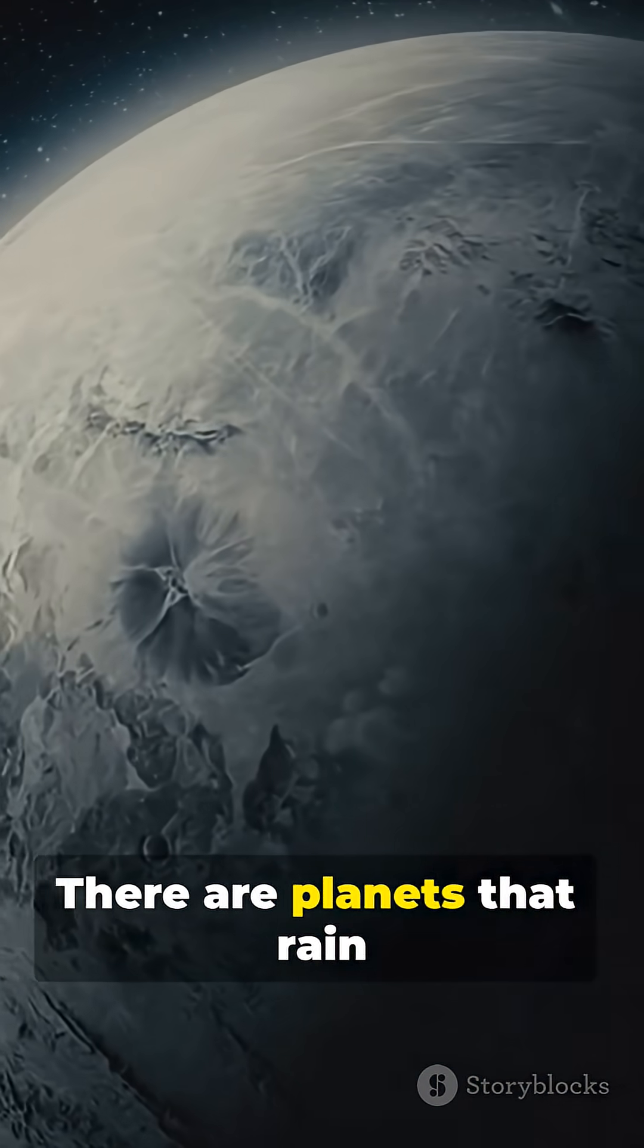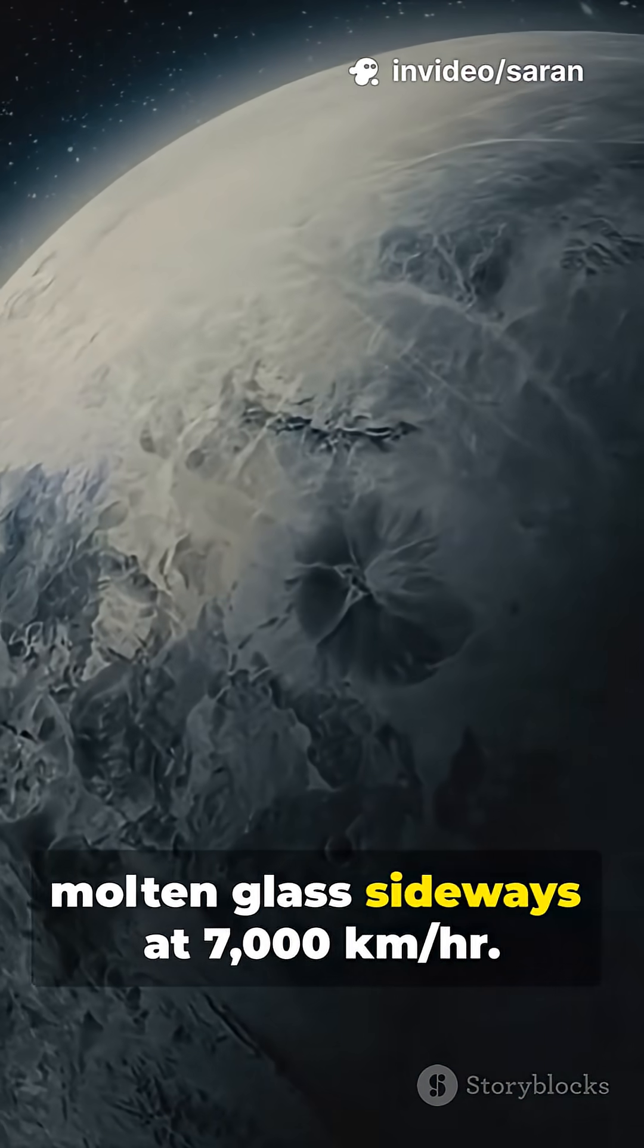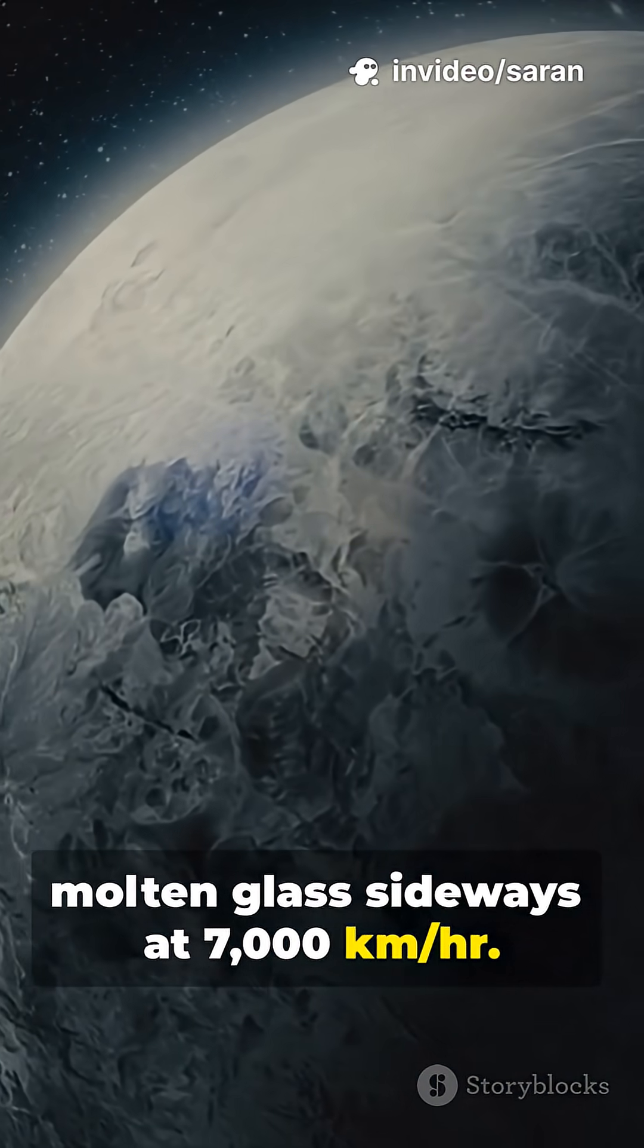Fact two: There are planets that rain molten glass sideways at 7,000 kilometers per hour.